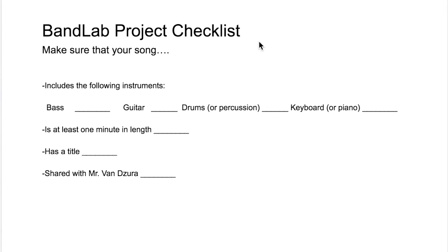Hello everybody, this is Mr. Vanzura. This video is for middle school students and we'll cover our BandLab project checklist and rubric. Over the last couple of weeks I've had you introduce yourselves to BandLab by creating an account and then starting a small mini project, just where you got the hang of putting some loops into your track and trying some different instruments. This week we're going to do our first formal project on BandLab. It's a very easy project and this checklist will cover all the things that you need to include.